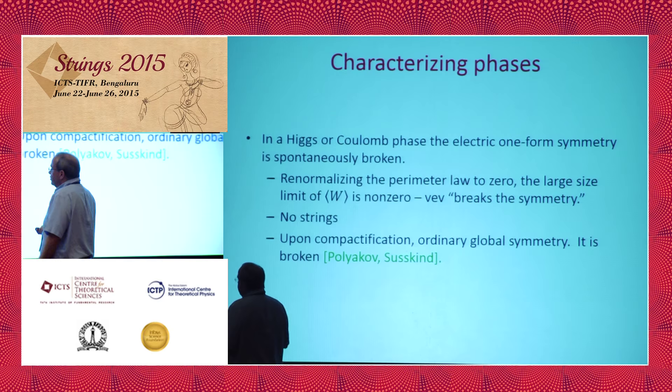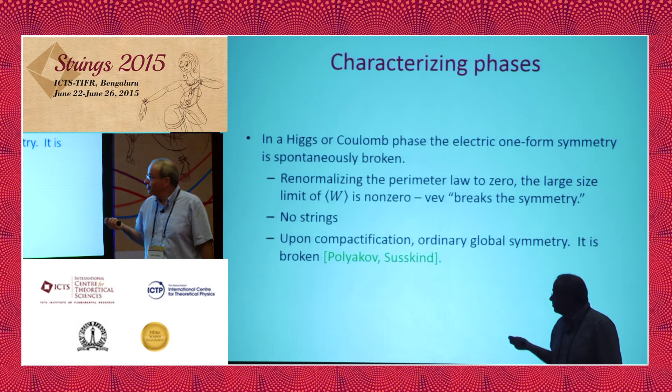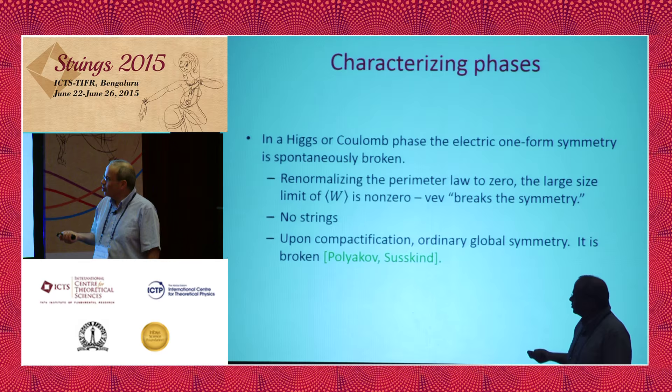I'll leave you a homework problem: the Abelian-Higgs model is in a Higgs phase, and it has strings. So what am I talking about? How come the Abelian-Higgs model has strings even though it's in the Higgs phase? You can submit your homework later.